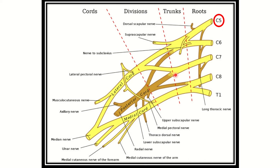These roots are very important for any type of exam. The five roots of the brachial plexus are cervical 5, cervical 6, cervical 7, cervical 8, and thoracic 1. Among them, cervical 5 is the past (uppermost) root. From this root, two nerves arise: the dorsal scapular nerve and the long thoracic nerve.